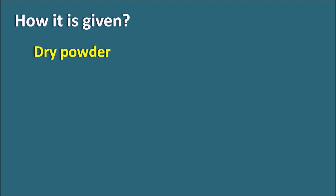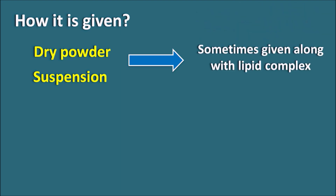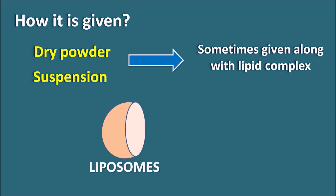How is it given? Amphotericin B is available as a dry powder for reconstitution with sterile water for injection, or as a suspension. This drug is given mainly by IV route. When given as an IV infusion, the rate of infusion should be slow because a high infusion rate may cause renal toxicity and other adverse effects. To improve absorption and reduce adverse effects, this drug is sometimes combined with a lipid complex — specifically, Amphotericin B can be incorporated into liposomes as drug carriers to improve bioavailability and reduce side effects.